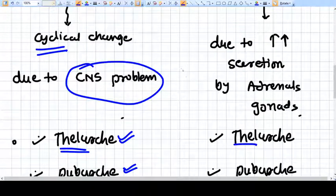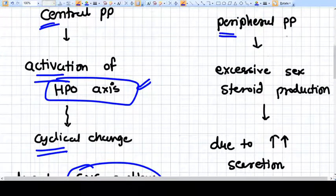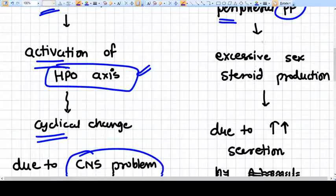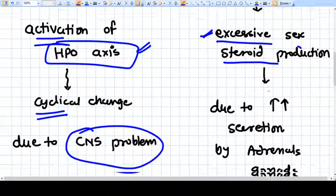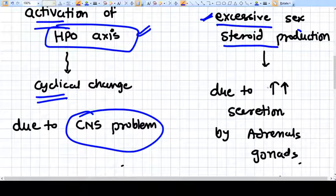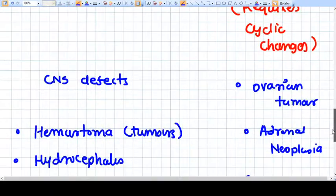In peripheral precocious puberty, generally you will have excessive sex steroid production by anything that can be a tumor or overactivity, secretion increased due to some cause.